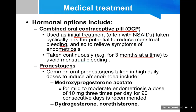Progestogens can also be used. Common oral progestogens taken in high daily doses to induce amenorrhea include medroxyprogesterone acetate, dydrogesterone, or norethisterone. Progestogens work by the same mechanism — inducing negative feedback on the pituitary-hypothalamic axis.